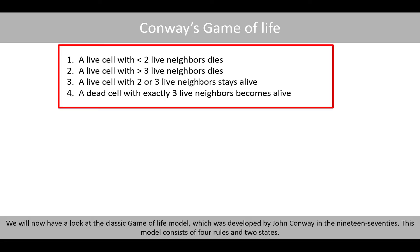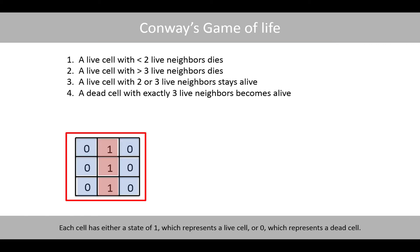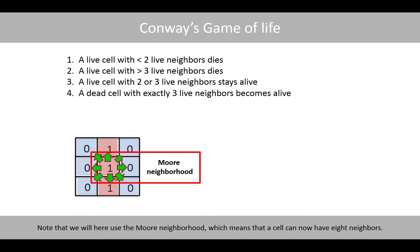We will now have a look at the classic Game of Life model, which was developed by John Conway in the 1970s. This model consists of four rules and two states. Each cell has either a state of one, which represents a live cell, or zero, which represents a dead cell. Note that we will here use the Moore neighborhood, which means that a cell can now have eight neighbors.